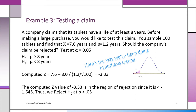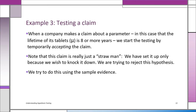This is the way you've been taught to do it — it's good, it works — and your conclusion is to reject H0 and not buy these tablets. Now we're going to explain it a little differently. When a company makes a claim about a parameter — in this case that the lifetime of its tablets is 8 years or more — we start with temporarily accepting the claim. We call that a straw man, something we want to shoot down. But right now we accept it temporarily: mu is more than 8 years.